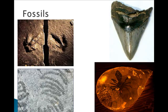Fossils can include casts and molds, like you see on the upper left, trace fossils like you can see on the upper right or lower left, petrified fossils — which you see on the megalodon tooth on the upper right — and also amber or frozen fossils, which you find in the lower right.